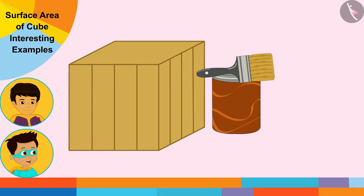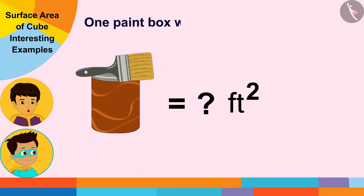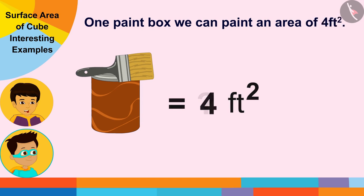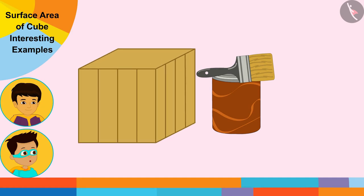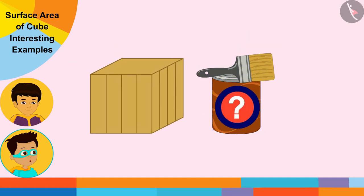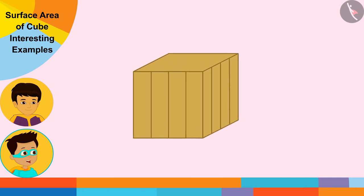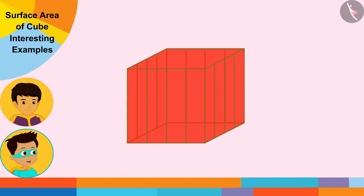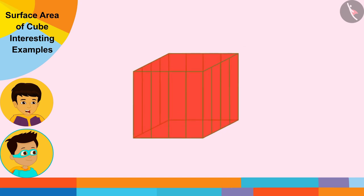Manas, this stool is cube-shaped. Can you tell me how many square feet you can paint with one color box? The shopkeeper told me that with one paint box we can paint an area of four square feet. To find out how many boxes of paint you will need to paint this stool, first we need to find the sum of the areas of all the surfaces of this stool.